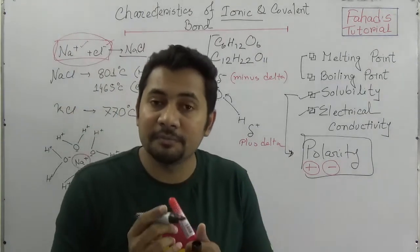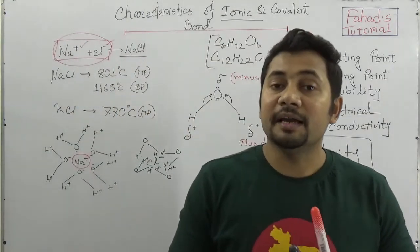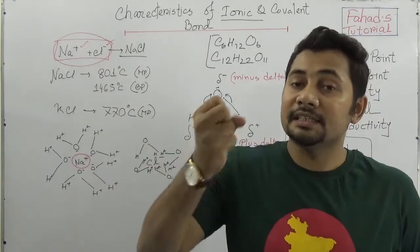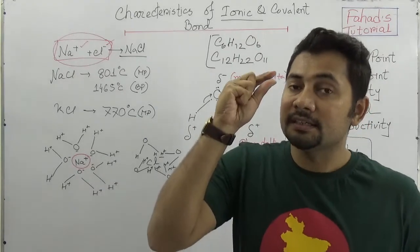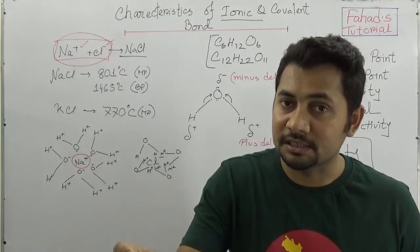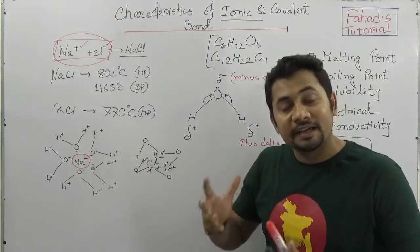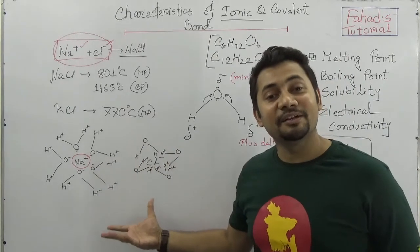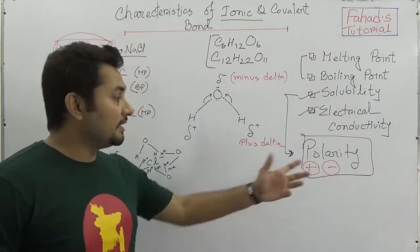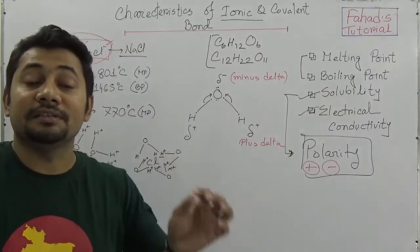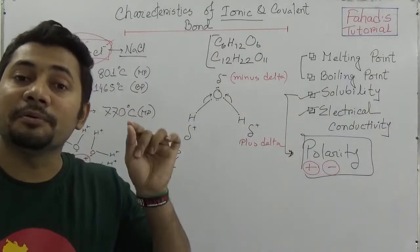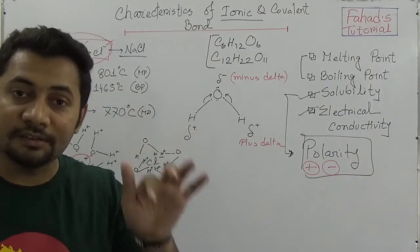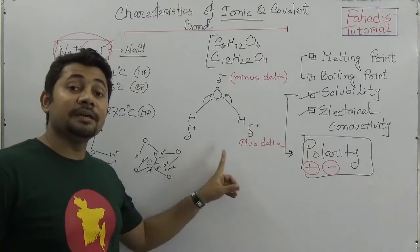Ionic compounds are formed by donation and acceptance of electrons, creating positive and negative charges. Since positive and negative charges are also created in the water molecule due to polarity, the ionic compounds are soluble in water. That is why water is called the universal solvent. Covalent compounds, on the other hand, don't create polarity, so they don't have positive and negative parts, and therefore they don't dissolve in water.